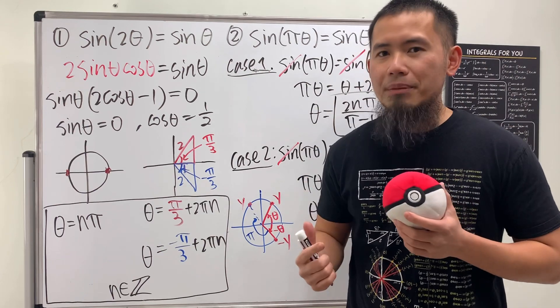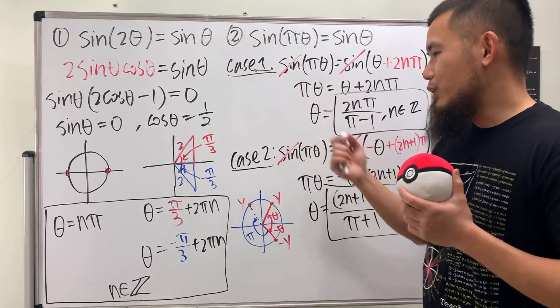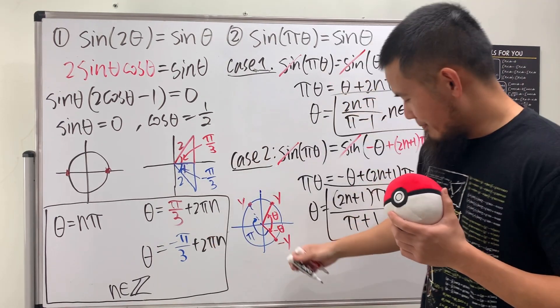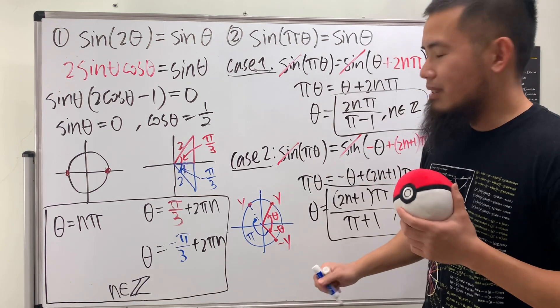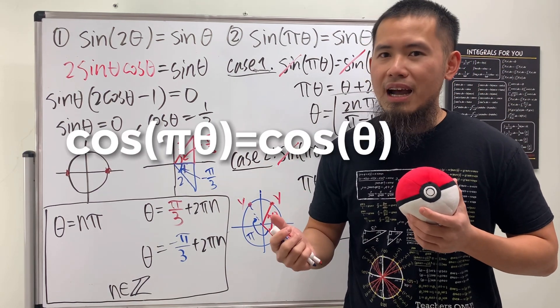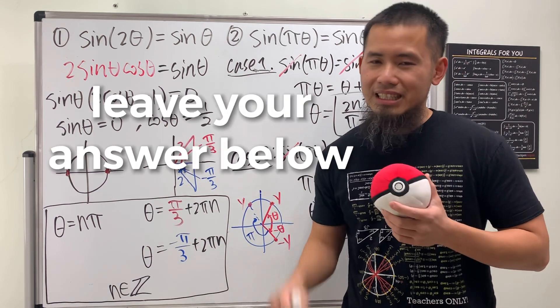So this is how you legitimately cancel out sine. If you have sine of whatever is equal to sine of whatever like this. Pretty cool, huh? Now, you guys can try this question on the screen. Cosine of pi theta is equal to cosine of theta. What's the answer for that? Leave a comment down below the link. So, that's it.